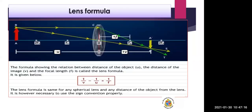Now comes the lens formula. The lens formula shows the relationship between the distance of the object, the distance of the image, and the focal length. U is the distance of the object from the lens.